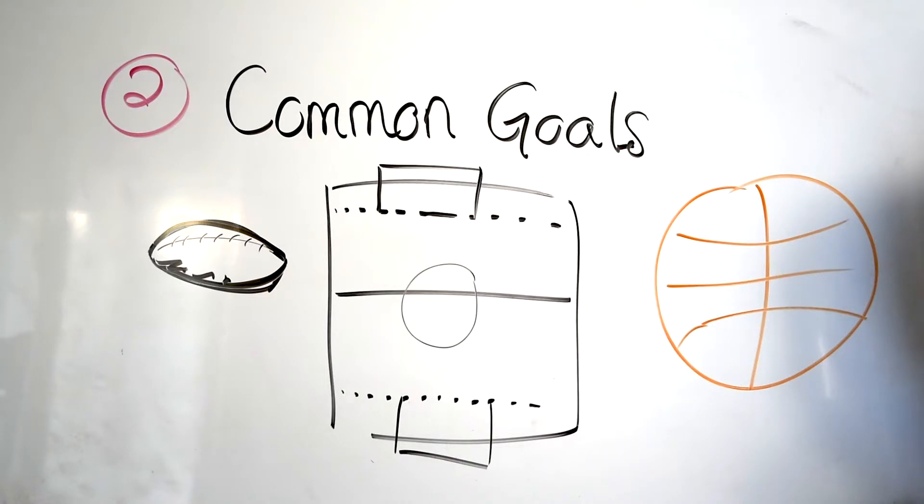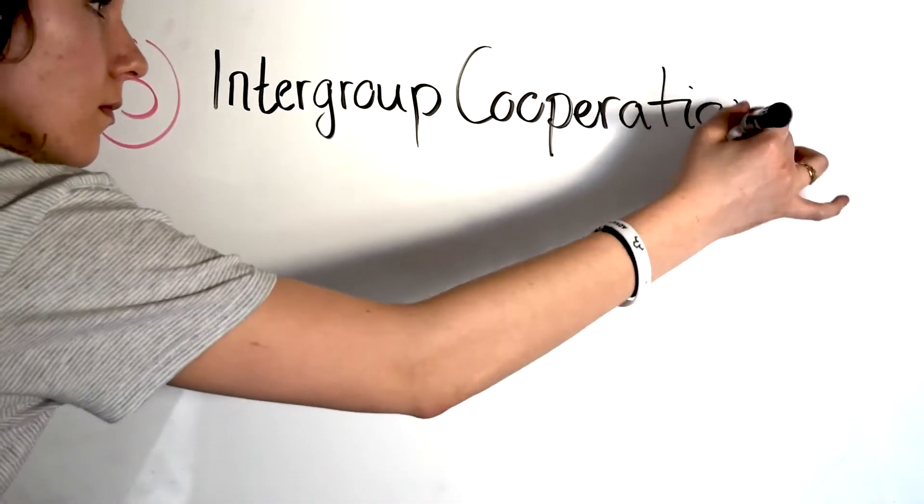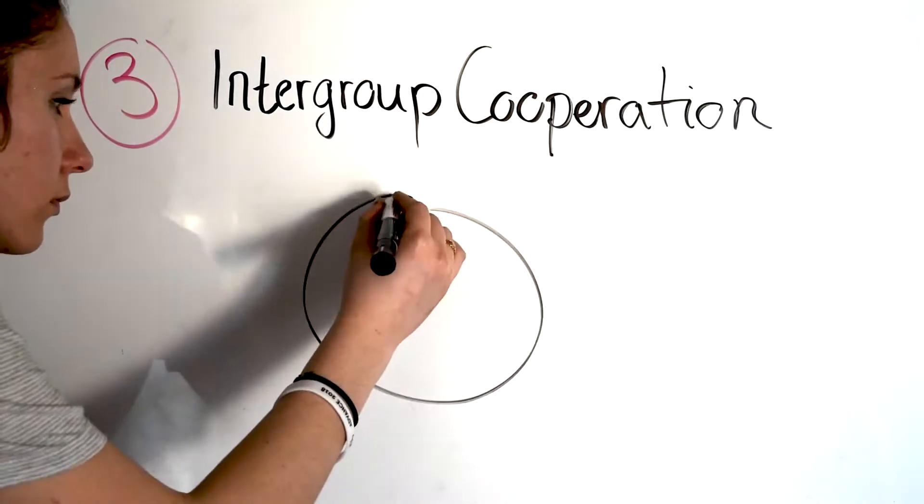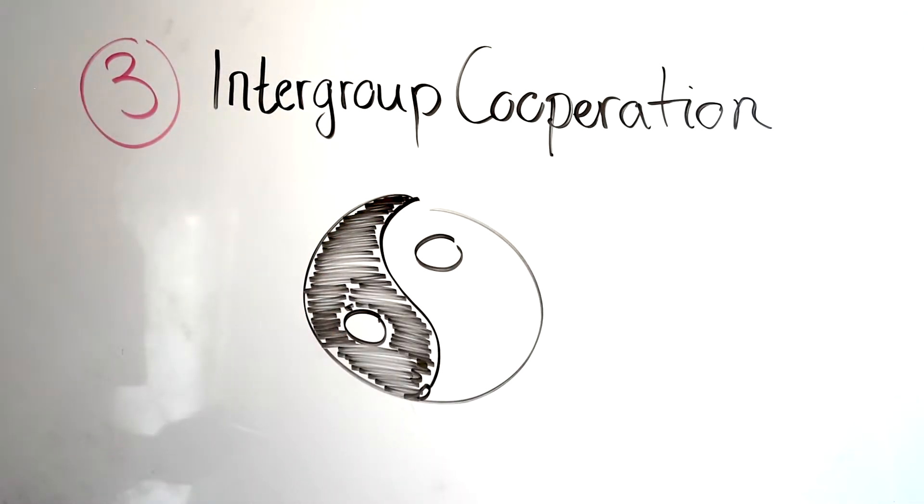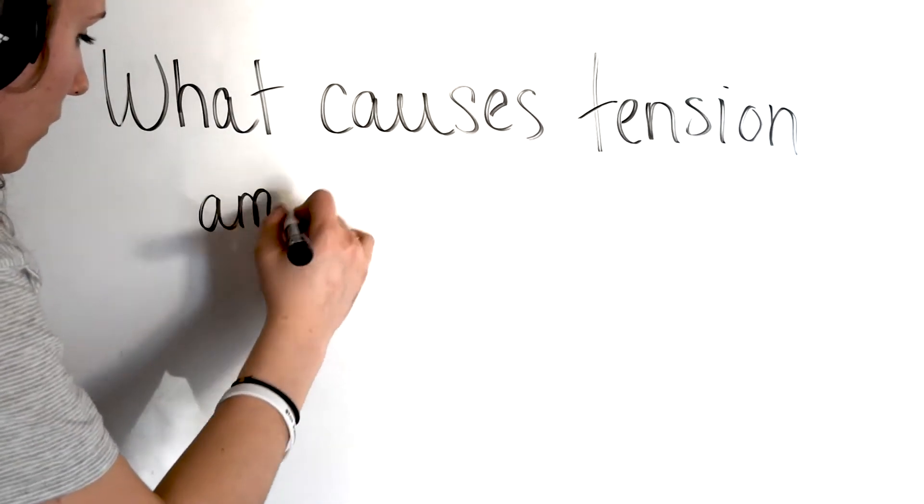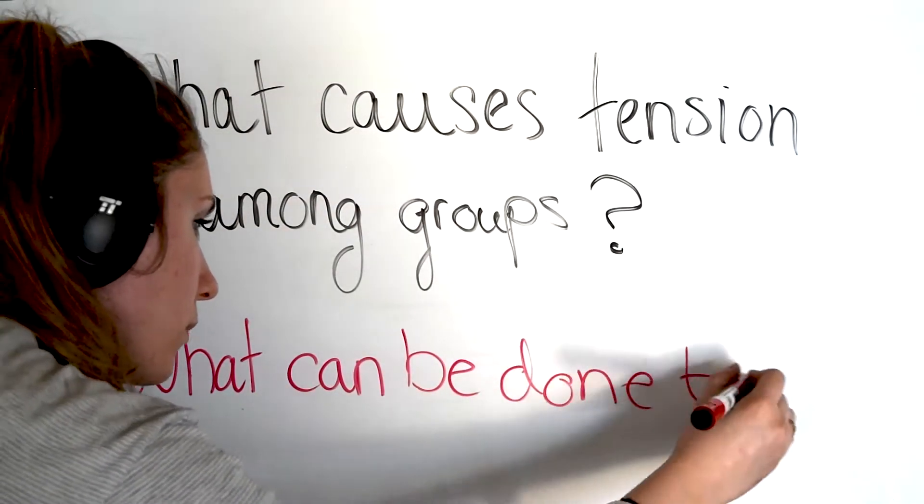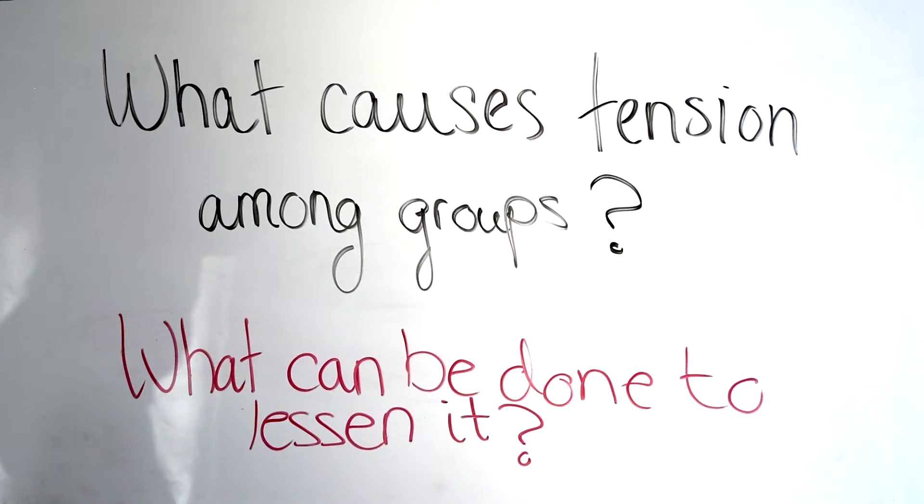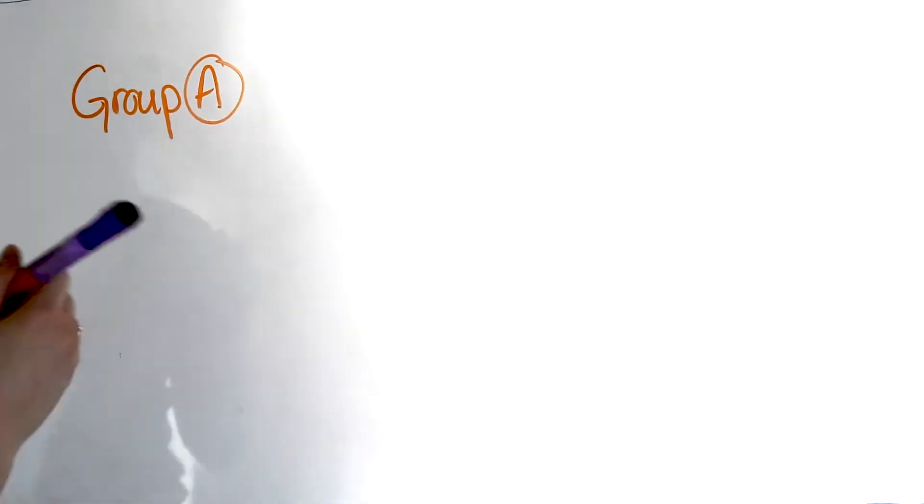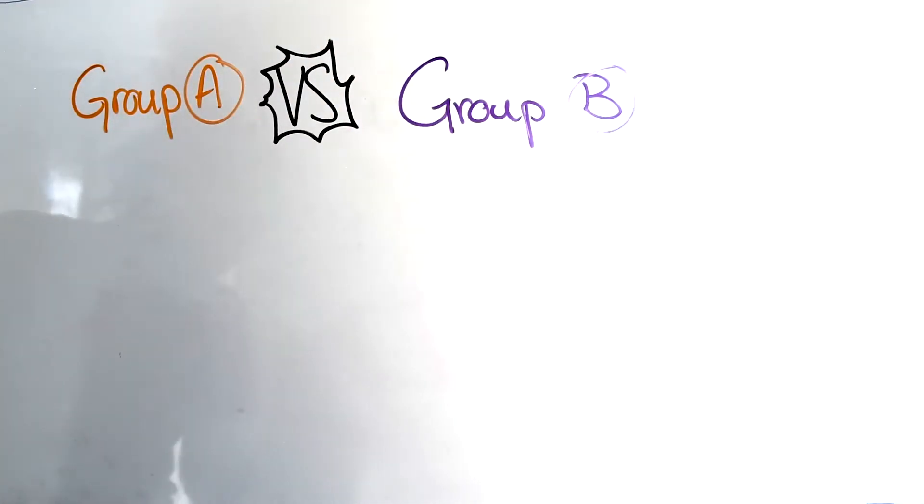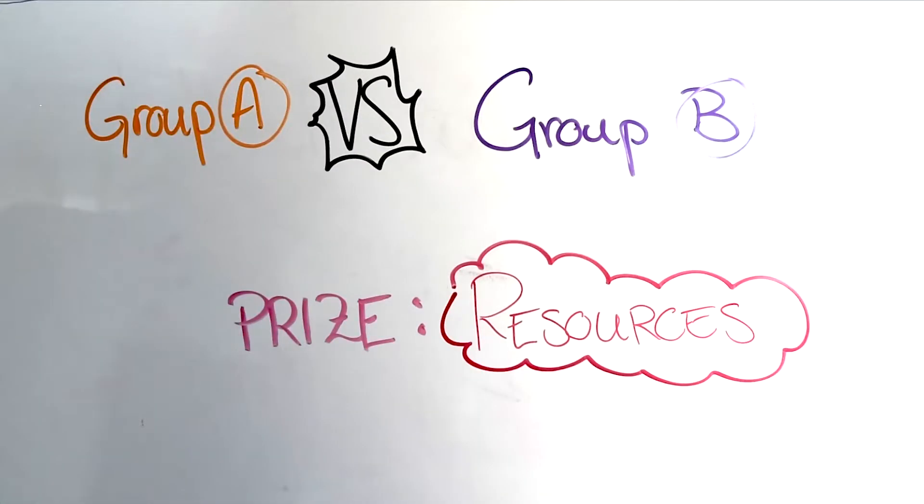The next condition is intergroup cooperation. All goals should be based around cooperation rather than competition. To explain this, we can look at the Robbers Cave Study. During the 1950s, psychologists Muzafer and Carolyn Wood Sherif asked what causes tension among groups and what can alleviate it. They hypothesized that conflict arises when groups compete for limited resources.